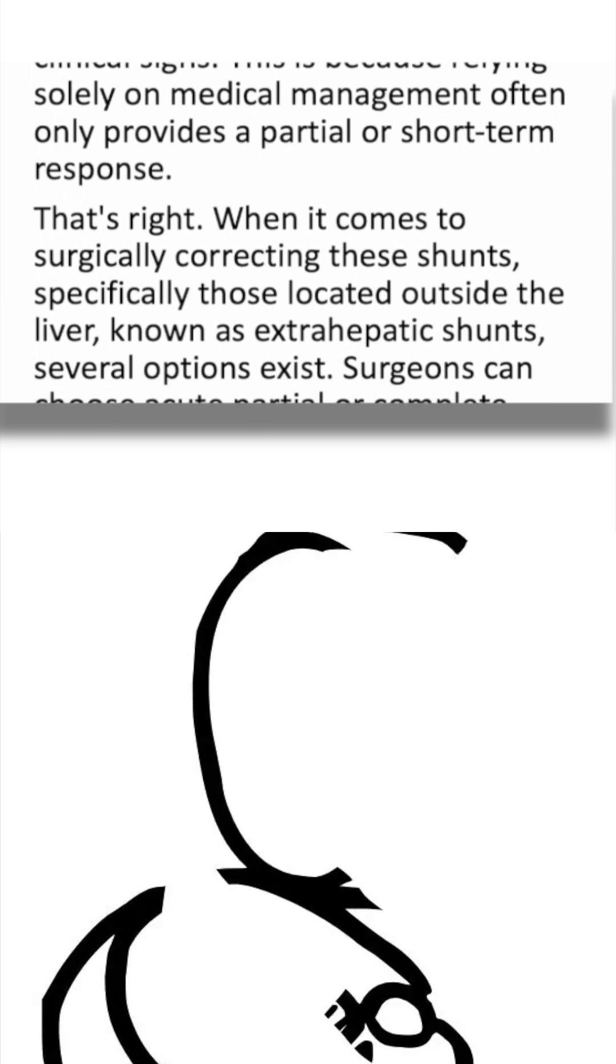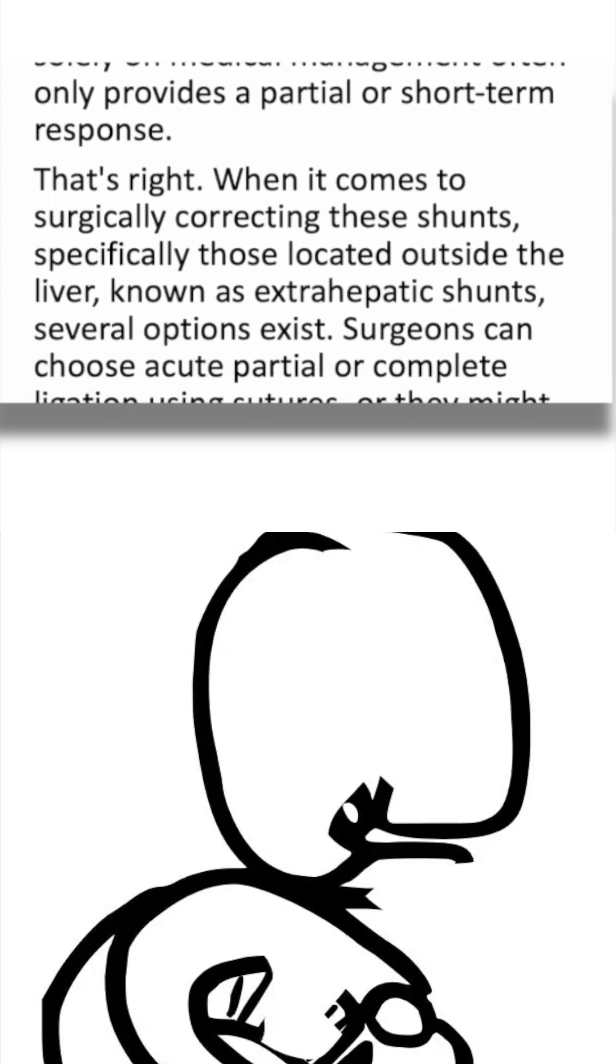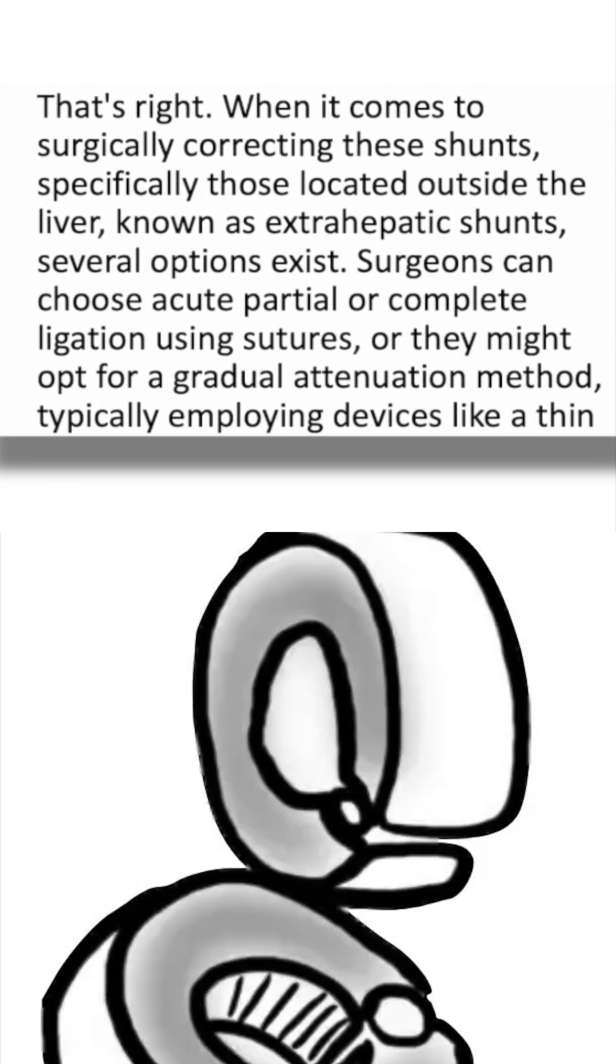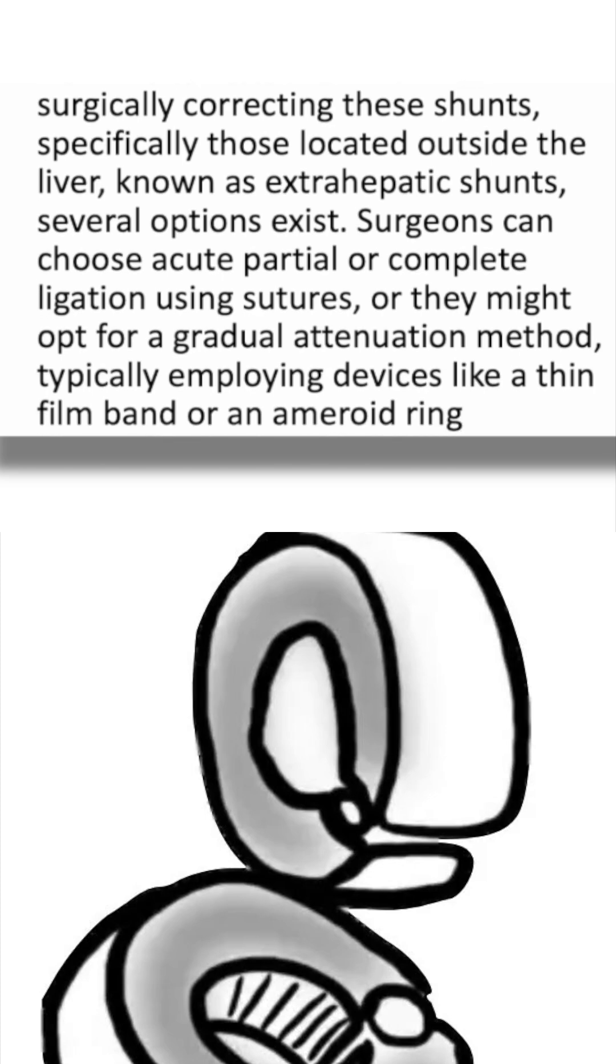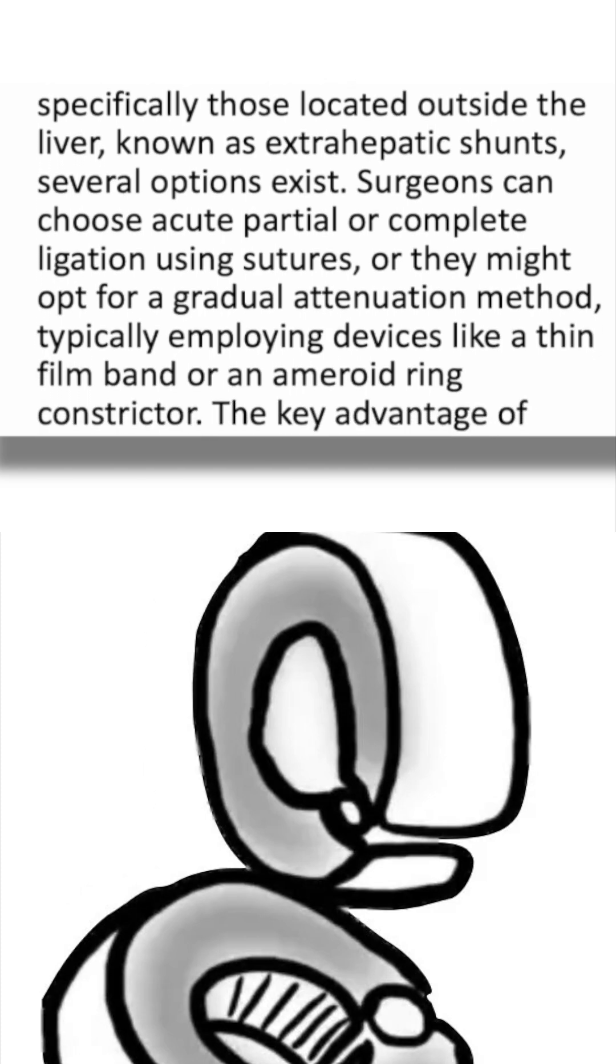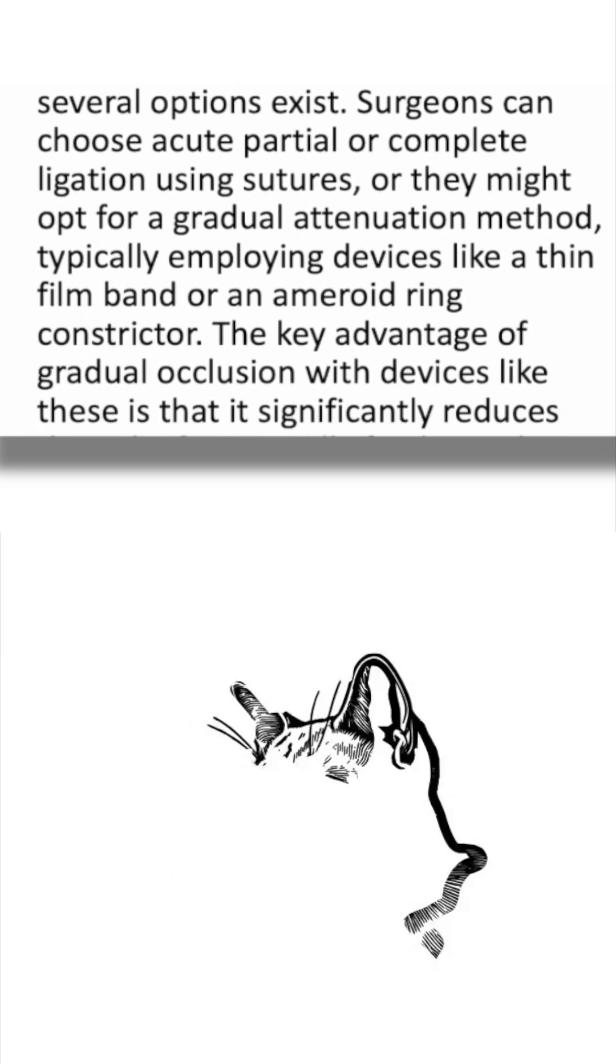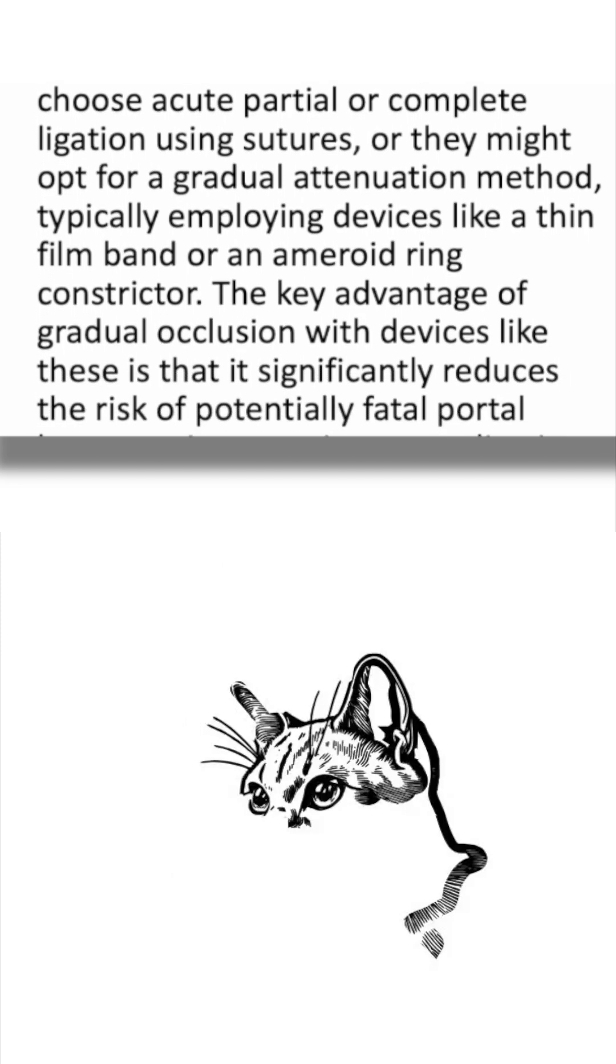That's right. When it comes to surgically correcting these shunts, specifically those located outside the liver, known as extrahepatic shunts, several options exist. Surgeons can choose acute partial or complete ligation using sutures, or they might opt for a gradual attenuation method, typically employing devices like a thin film band or an ameroid ring constrictor.